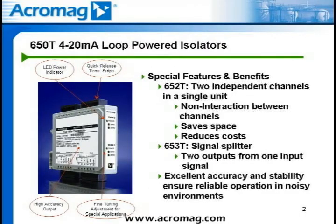The 652T provides two 4 to 20 milliamp DC process current channels in one unit. Each channel operates independently and is isolated from the other to prevent interaction between channels. The dual independent channel feature can also save space and reduce cost for panel builders.